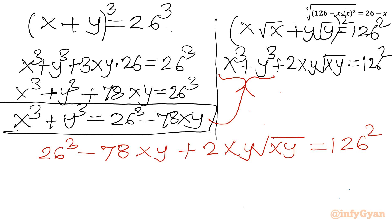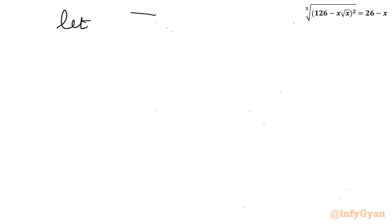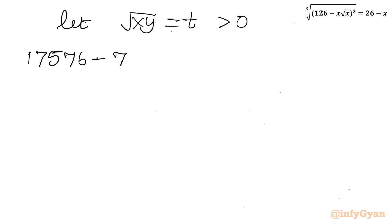Now computing: 26³ = 17576 and 126² = 15876. I will use the substitution √(xy) = t, where t must be positive for real solutions. Substituting xy = t², the equation becomes: 17576 - 78t² + 2t³ = 15876.